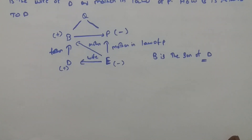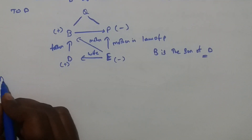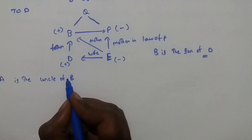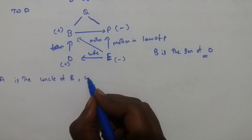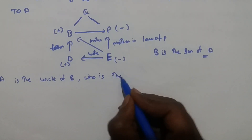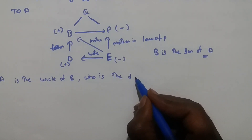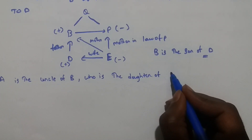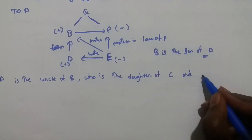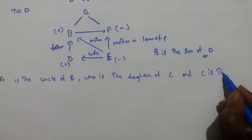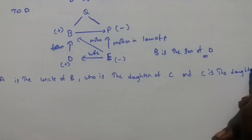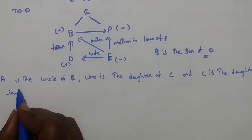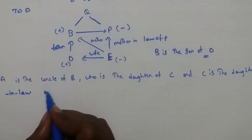Now let's see another problem. A is the uncle of B, who is the daughter of C. And C is the daughter-in-law of P.